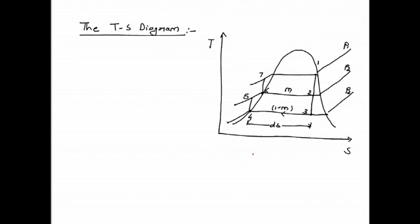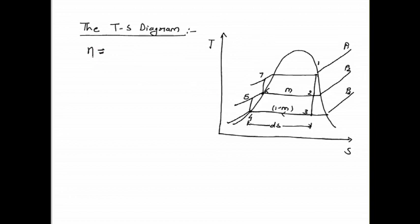At point 6, the 1 minus M water mixes with the M amount of steam, and the temperature of the water increases. Process 6 to 7 represents the second pumping process, and process 7 to 1 represents the heat addition process in the boiler. The efficiency formula for the regenerative cycle is: eta equals WT minus WP divided by Q1, where WT is the turbine work, WP is the pump work, and Q1 is the heat added.